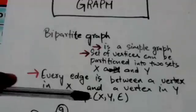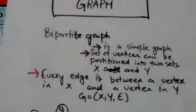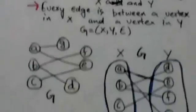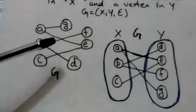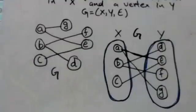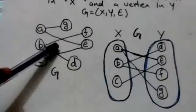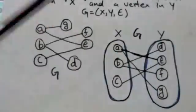It is represented like this: G equals X, Y, E. Now see this simple graph G. This graph has seven vertices which is partitioned into two sets X and Y.